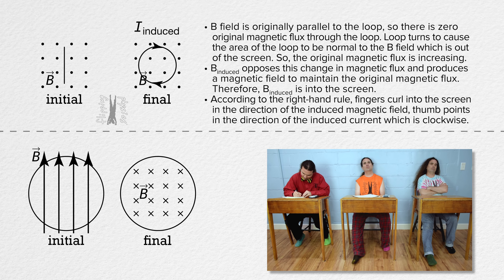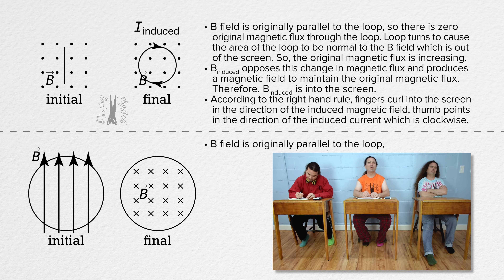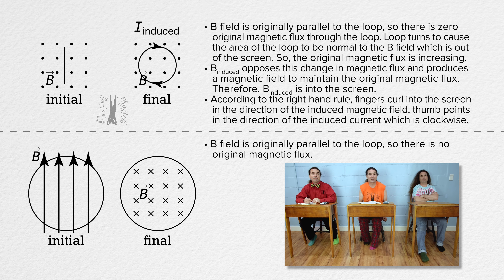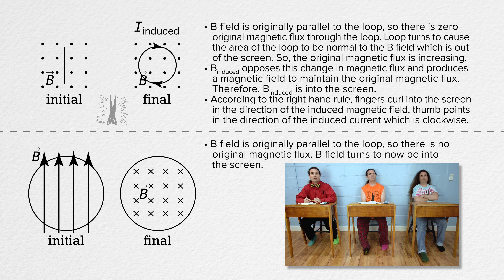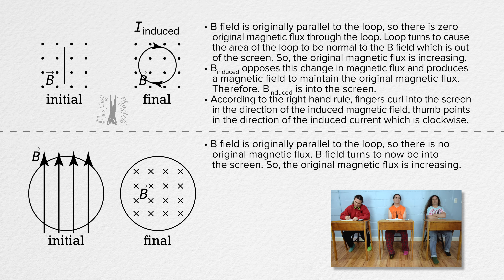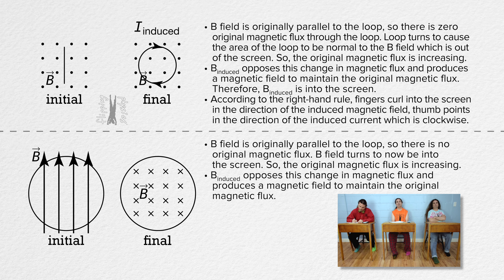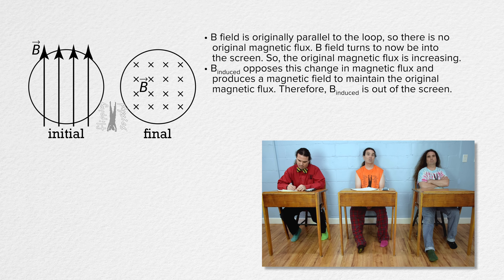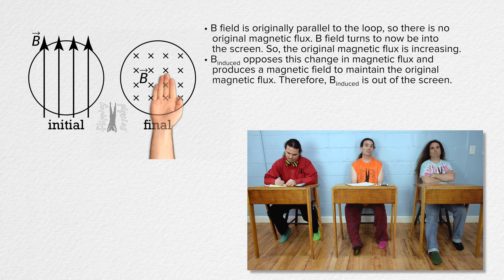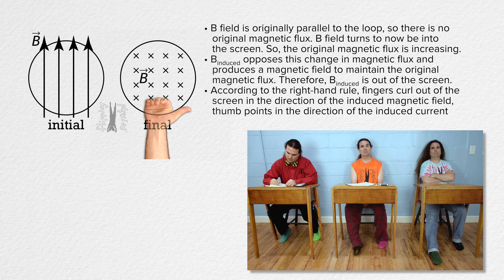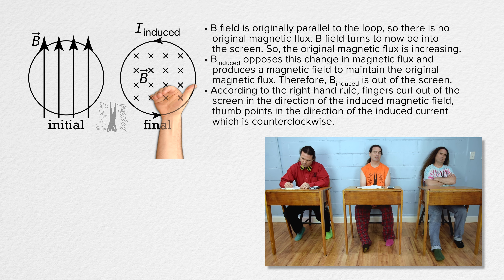Bobby, please do this one. The original magnetic field is parallel to the loop initially, which means initially there is zero original magnetic flux through the loop. The magnetic field then turns and at the final point is into the screen, so the original magnetic flux is increasing. The induced magnetic field opposes this changing magnetic flux, so it produces a magnetic field which is out of the screen. According to the right hand rule, fingers curl out of the screen in the direction of the induced magnetic field and the thumb points in the direction of the induced current in the loop, which is counterclockwise from this perspective.